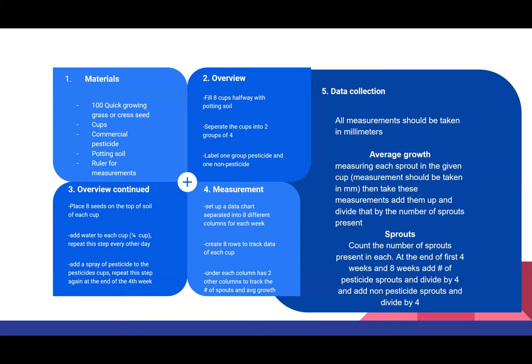For a quick overview of the lab setup, some of the materials I had were fast-growing seeds — I used watercress seeds. You could also use grass or any sort of quick-growing plant. Other materials included cups, a commercial pesticide of your choice, potting soil, and a ruler for measurement. Basically what I did was get eight different cups and fill them halfway with soil, then add the seeds.